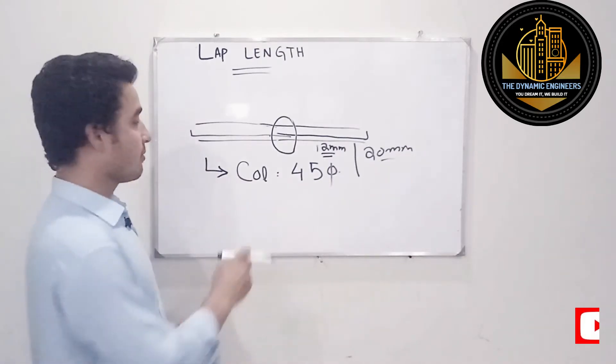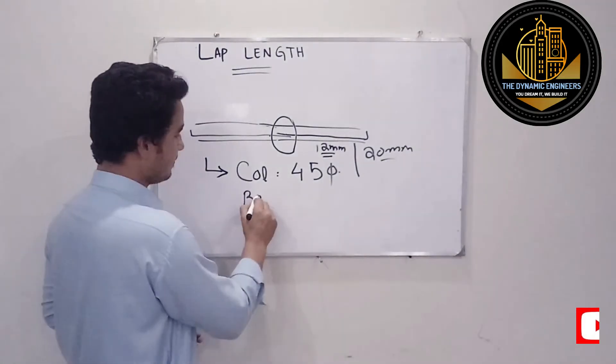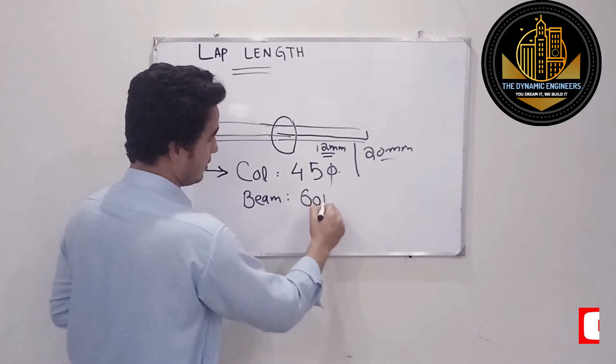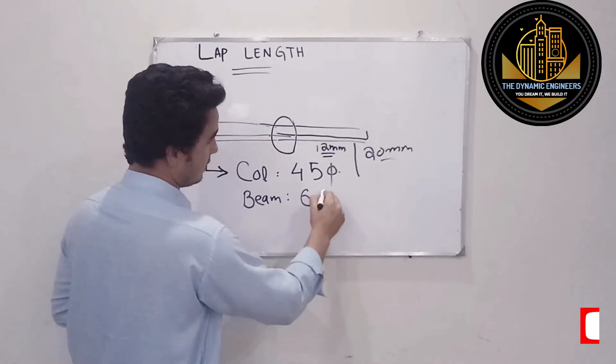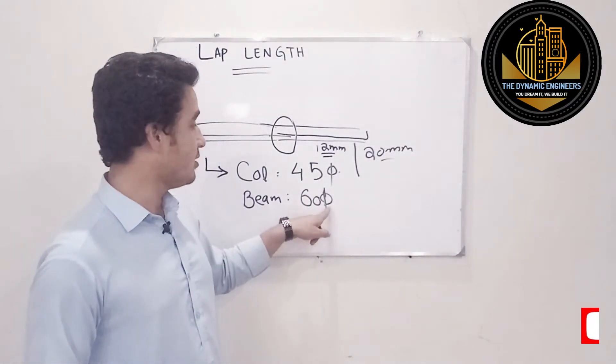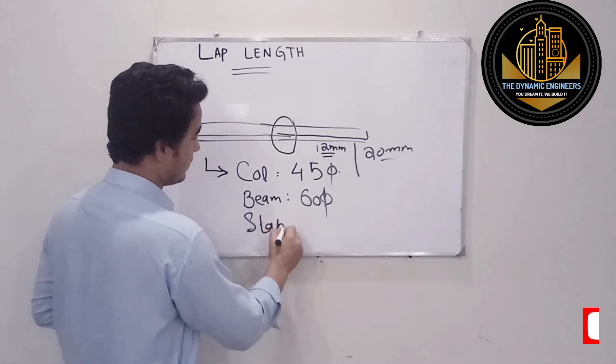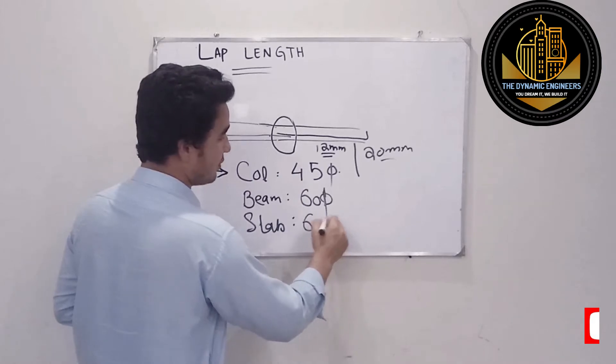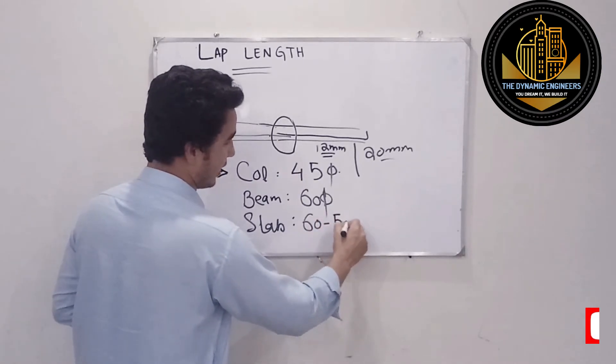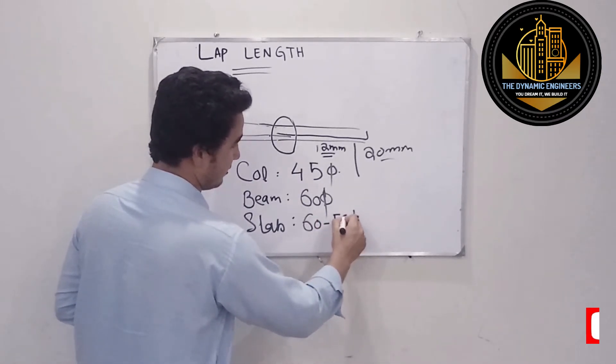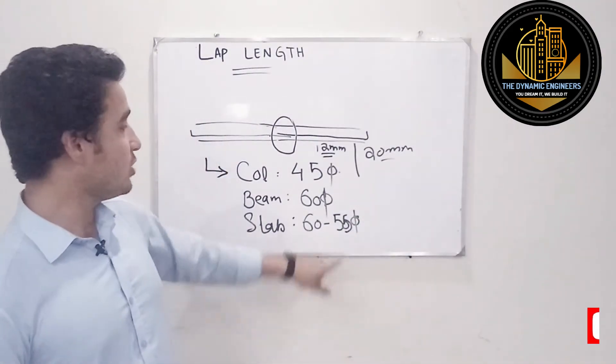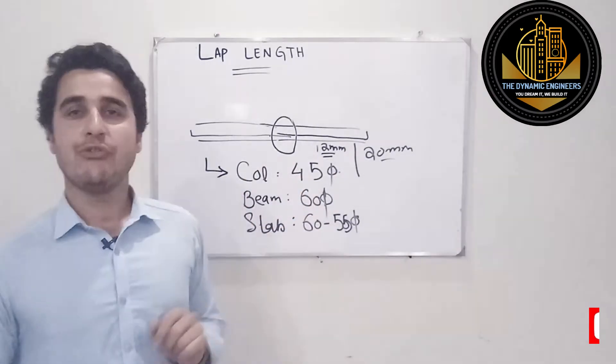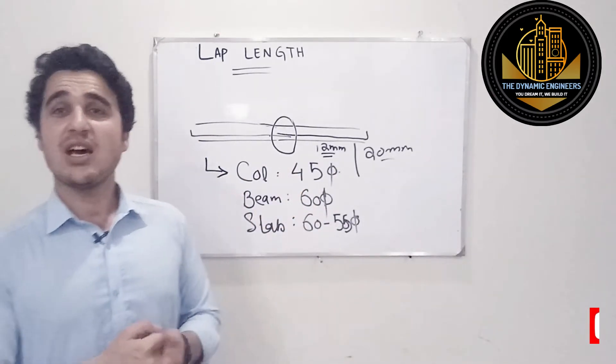So this is the value for column. For beams, that is 60D. This is the diameter. And for slab it is 55 to 60D. So for slab we use a value of 55 to 60D, for beam it is 60D, and for column it is 45D. So these are different values of lap length that we will be providing in building construction.